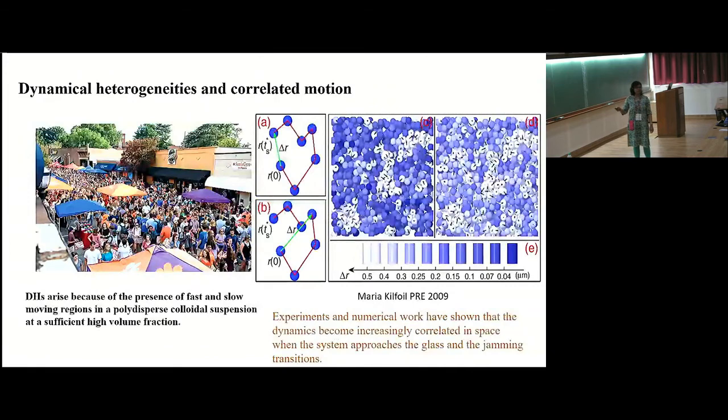So here's a picture of a jammed system in everyday life. This is just a market with a huge crowd of people. You can also think of buses or train platforms or wherever. And in a jammed situation such as this or on the road with lots of traffic, there will always be little areas that will be able to move a little faster than the other regions. Similarly, in a polydispersed colloidal suspension at a rather high volume fraction, you can have these regions of dynamical heterogeneities that arise because of the presence of fast and slow-moving regions.